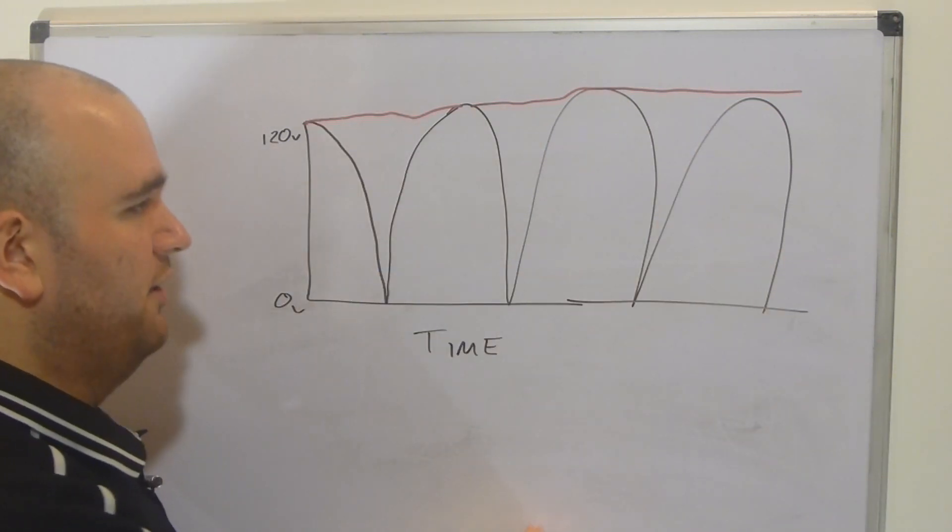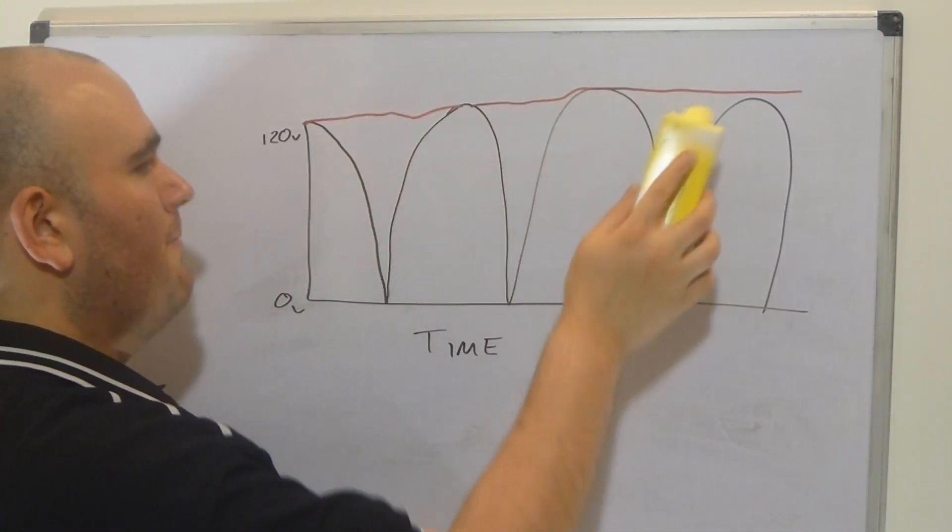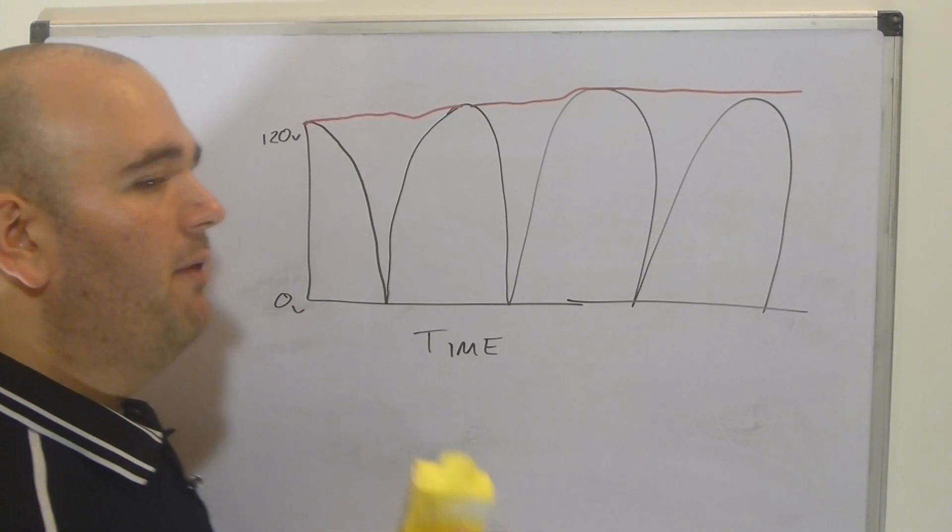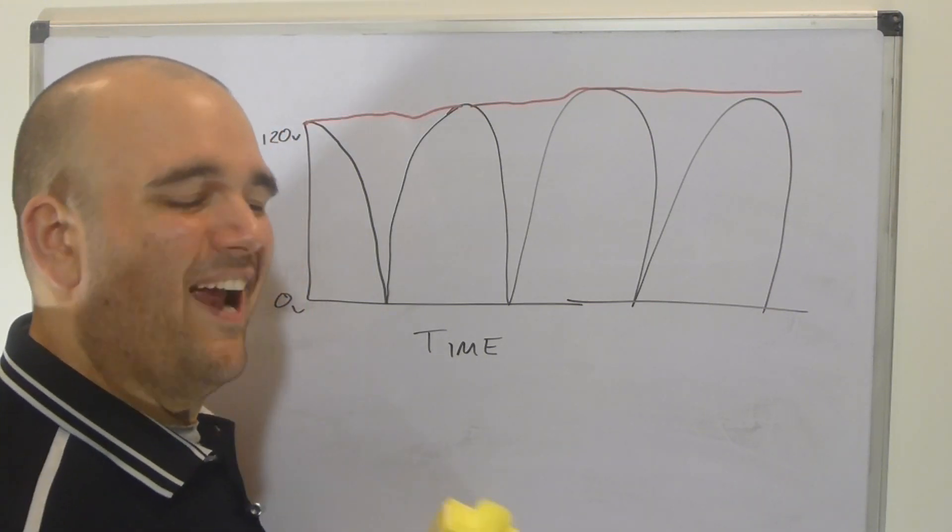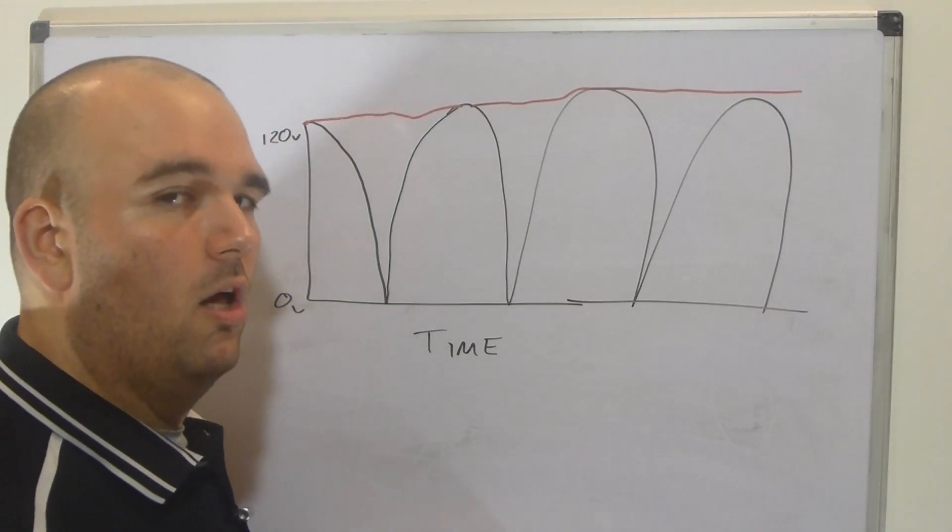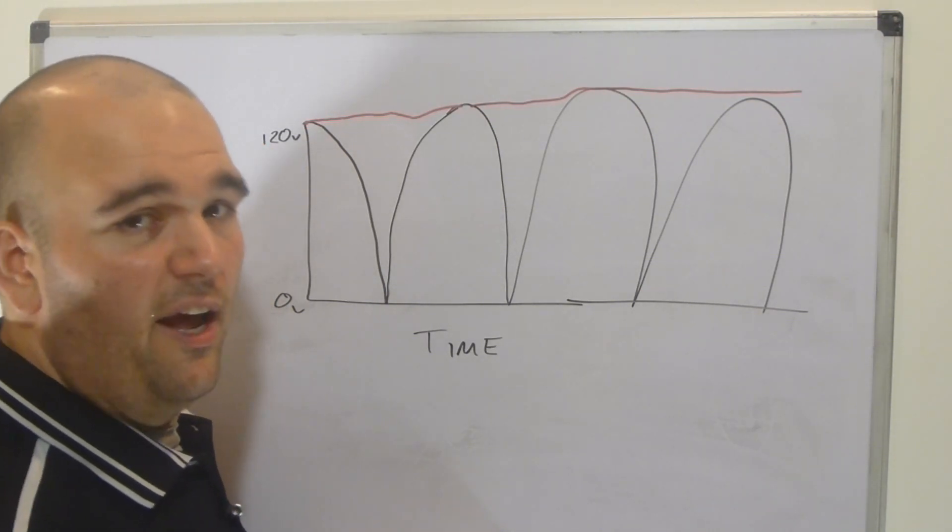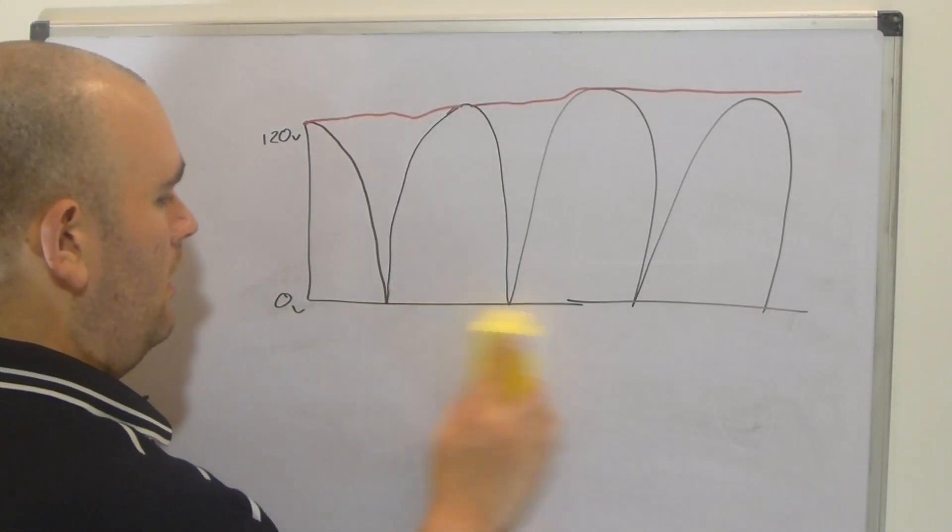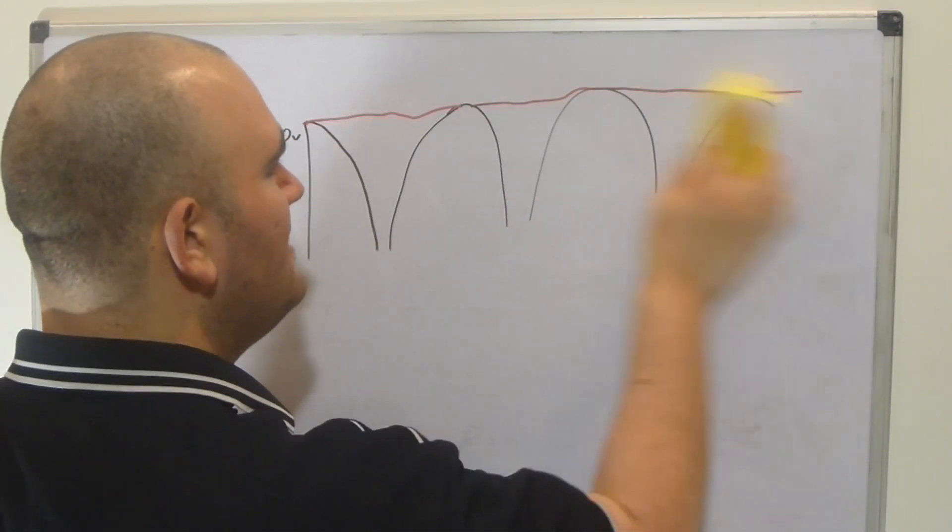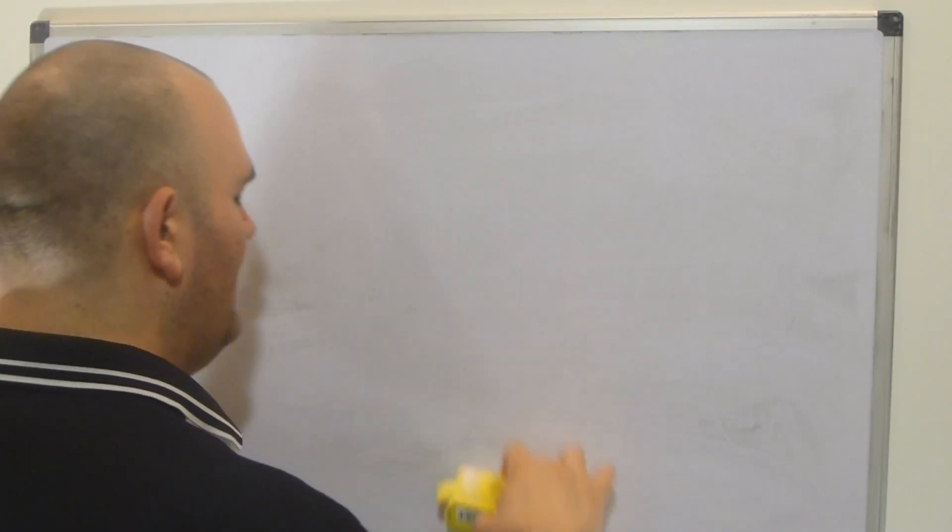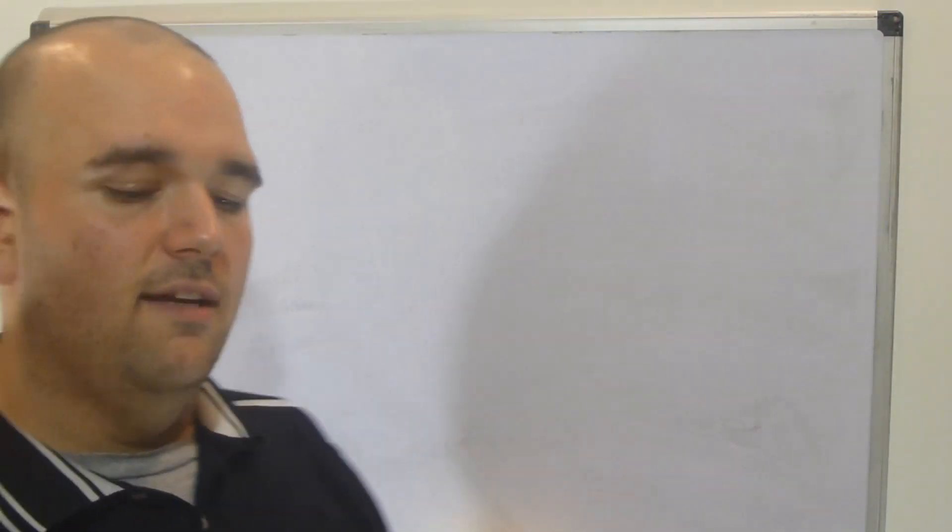That's a whole different video. That's a whole different concept. But this is where capacitors, I think, are probably most used. In fact, if you tear apart any wall wart, the thing that you plug into the wall, you're going to find a bunch of capacitors in there and four diodes, at least. Okay, so this is what allows us to convert that AC into DC voltage. It's a very important concept. It can be a little boring sometimes.